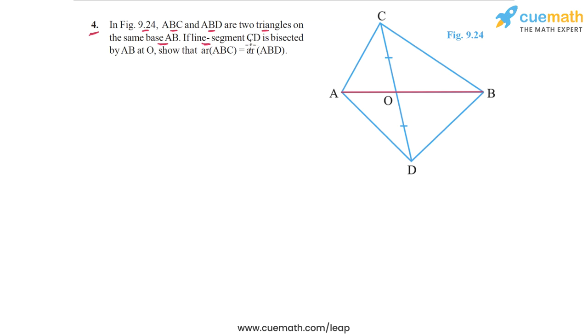If line segment CD is bisected by AB at O, so CD is this line segment joining C and D, and this segment is bisected at the point O, which means that OC and OD are equal.